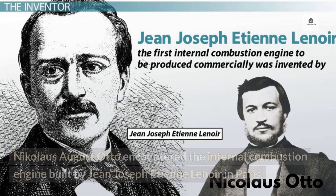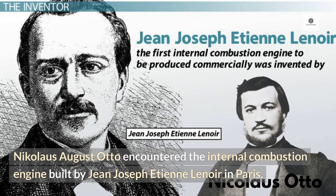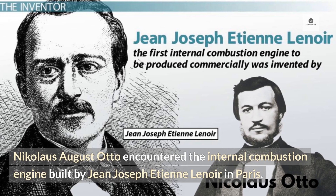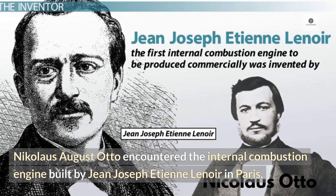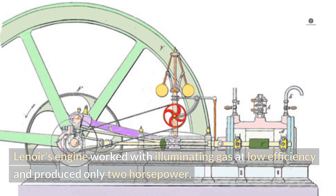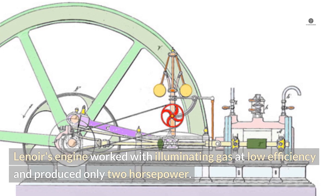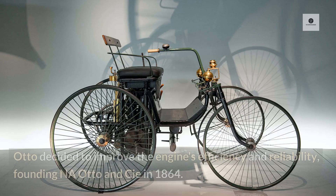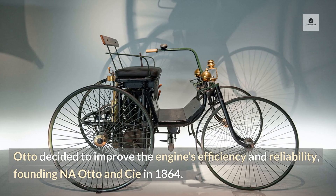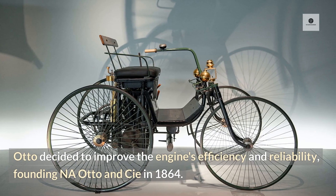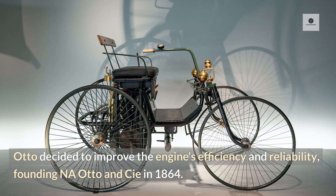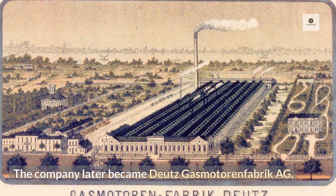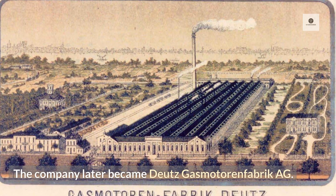The Otto Cycle: Nicolas August Otto encountered the internal combustion engine built by Jean-Joseph Etienne Lenoir in Paris. Lenoir's engine worked with illuminating gas at low efficiency and produced only two horsepower. Otto decided to improve the engine's efficiency and reliability, founding N.A. Otto and Cie in 1864. The company later became Deutz Gas Motor and Fabric AG.